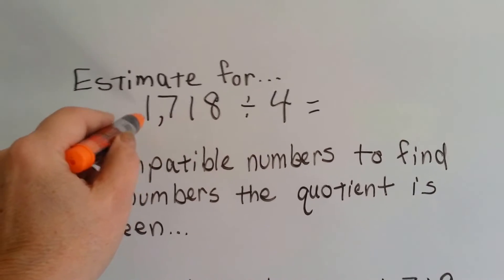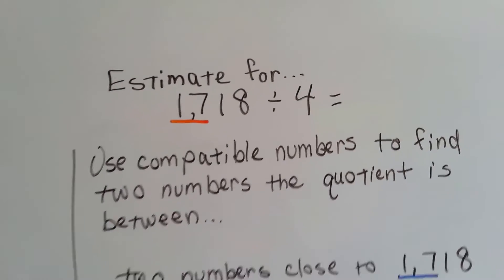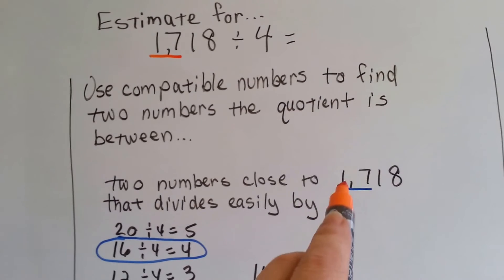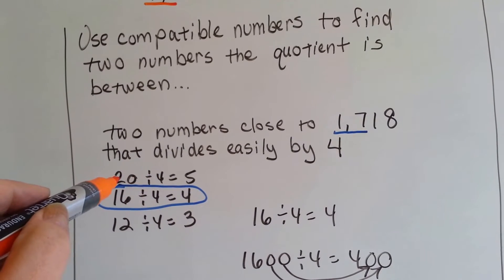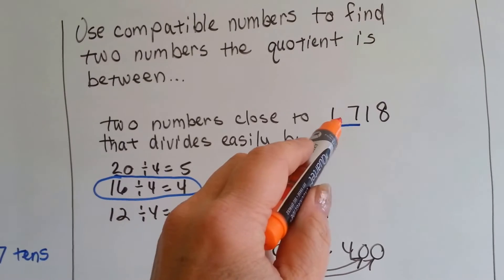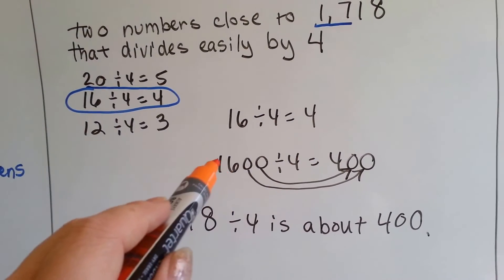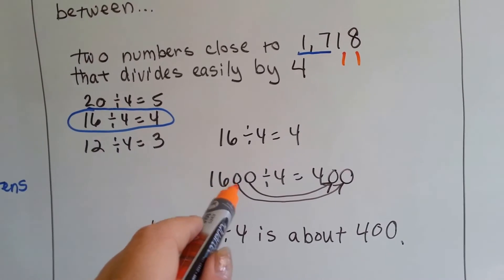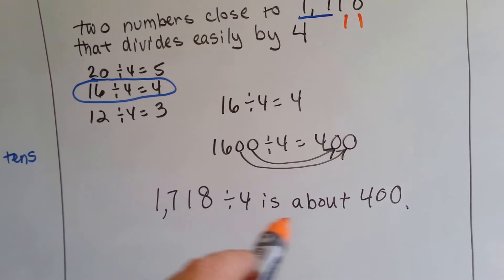Let's try another one. If we want to estimate 1718 divided by 4, we need to look at the 17. We're going to use compatible numbers to find the two numbers the quotient is between — two numbers close to 1718 that divide easily by 4. Well, 20 divided by 4 is 5, 16 divided by 4 is 4, and 12 divided by 4 is 3. The 16 is the closest to 17. So 16 divided by 4 is 4, and we add the two zeros on afterwards from those place values. So 1718 divided by 4 is around 400.